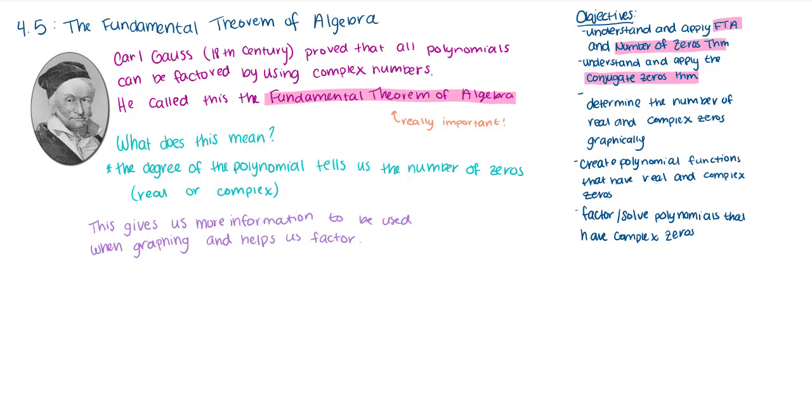This theorem says that the degree of the polynomial tells us the number of zeros, real or complex, that we have. If the degree is n, that means we have n zeros. More specifically, if we have a degree of 5, that means we have five zeros, and the number of real and complex zeros we have need to add up to five.